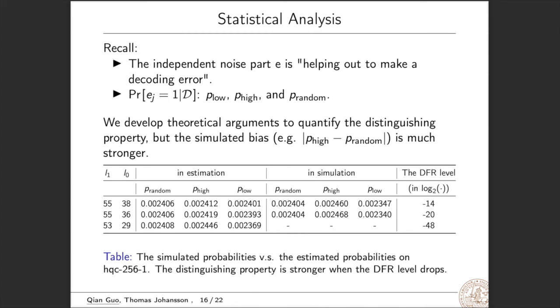So we develop theoretical estimates to quantify the distinguishing property. These theoretical arguments could explain this phenomenon well. But the estimated bias is much weaker than the simulated bias.